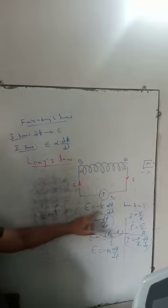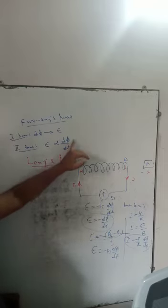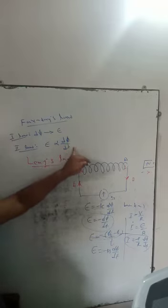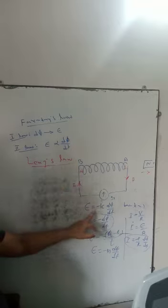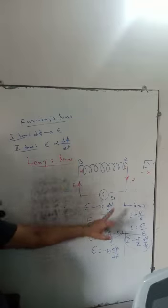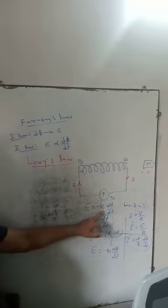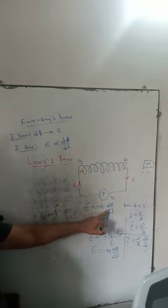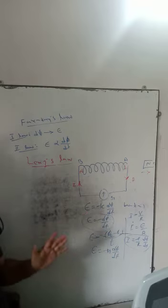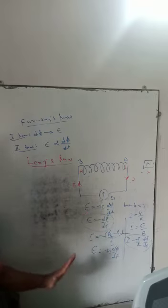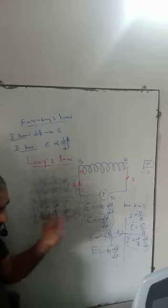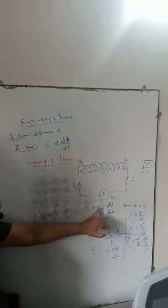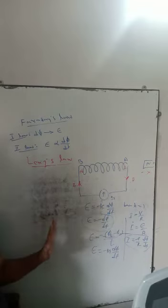That is Faraday's Law: epsilon is proportional to dΦ/dt. In Lenz's Law, epsilon is equal to minus k into dΦ/dt, where k is the proportionality constant and the minus sign indicates the direction of induced EMF is opposite to the direction of change in magnetic flux. If the magnetic flux changes, the opposite direction of EMF is induced according to Lenz's Law.